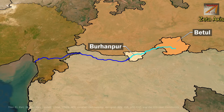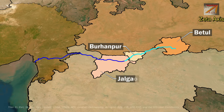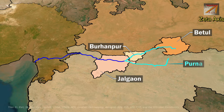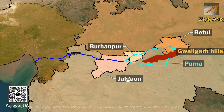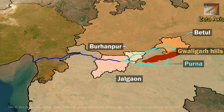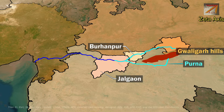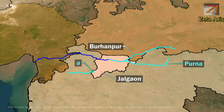From Burhanpur, the Taapti River flows into Jalgaon district where it meets Purna River. Purna River is a major left-bank tributary of Taapti, originating from Gwaligarh Hills. The Purna River joins Taapti River in Jalgaon district of Maharashtra. Within Jalgaon district, Girna River also meets Taapti River.